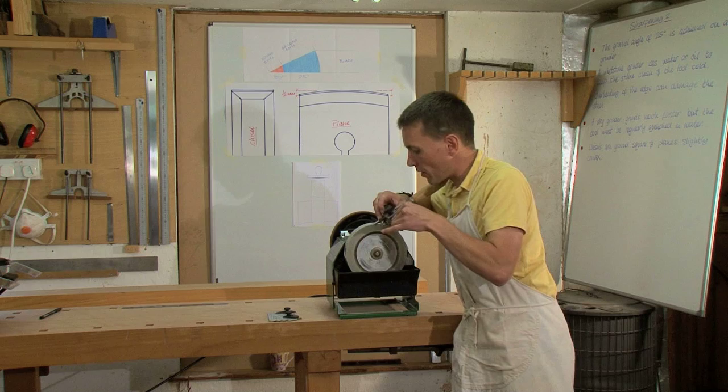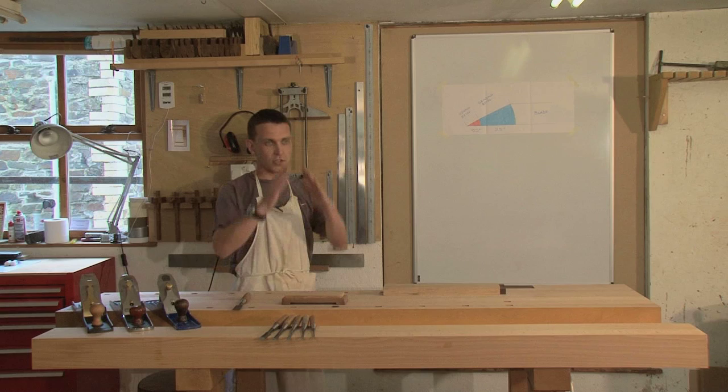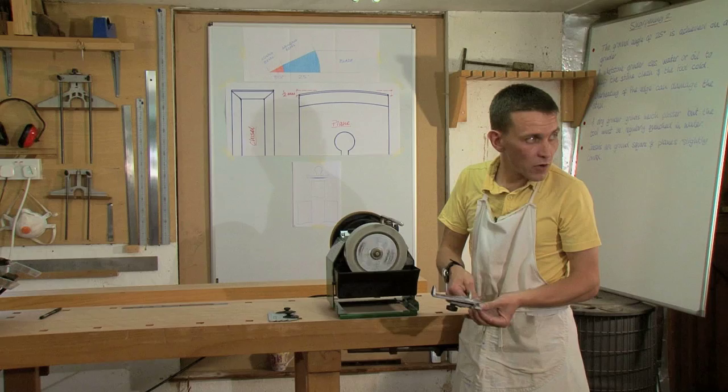Now I just need to move this across the whole stone, left to right, until I've ground the whole edge back, so there's no honed edge left at all.